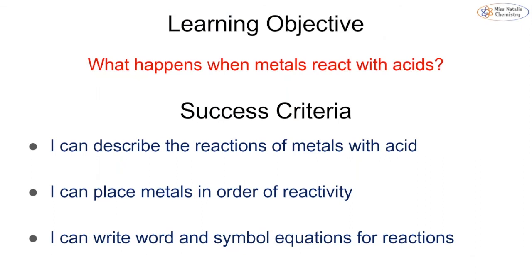Our learning objective was to look at what happens when metals react with acids. Hopefully you can now describe the reactions of metals with acids, put the metals in order of reactivity, and are getting better at writing word and symbol equations for these reactions. If there's anything you're not sure about, feel free to ask your teacher or leave a comment below — and we hope to see you back on the channel soon.